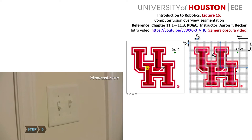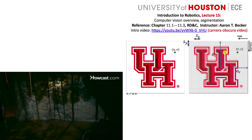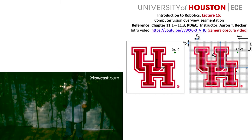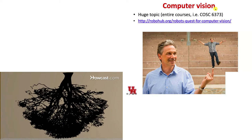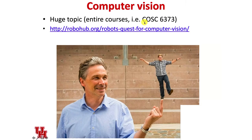The basic idea is there's a real world that exists out here. We take that, digitize it, and load it into our computer. Then we try to make some calculations to figure out where objects are and how we should reach and interact with them. Computer vision is a huge topic — so much so that there's a graduate course in computer vision offered in computer science, and many textbooks about computer vision applied to robotics.